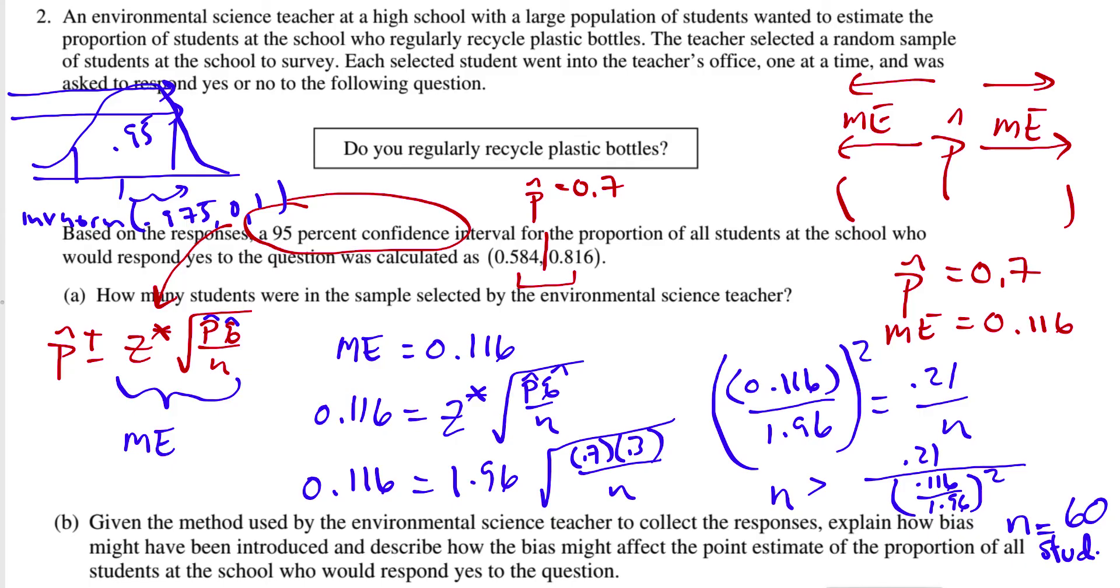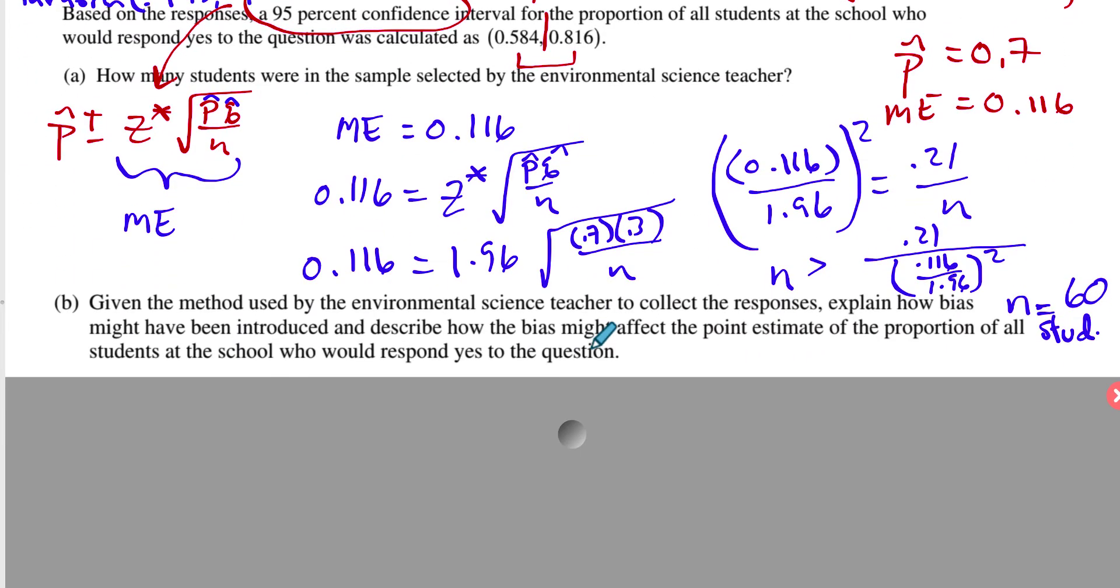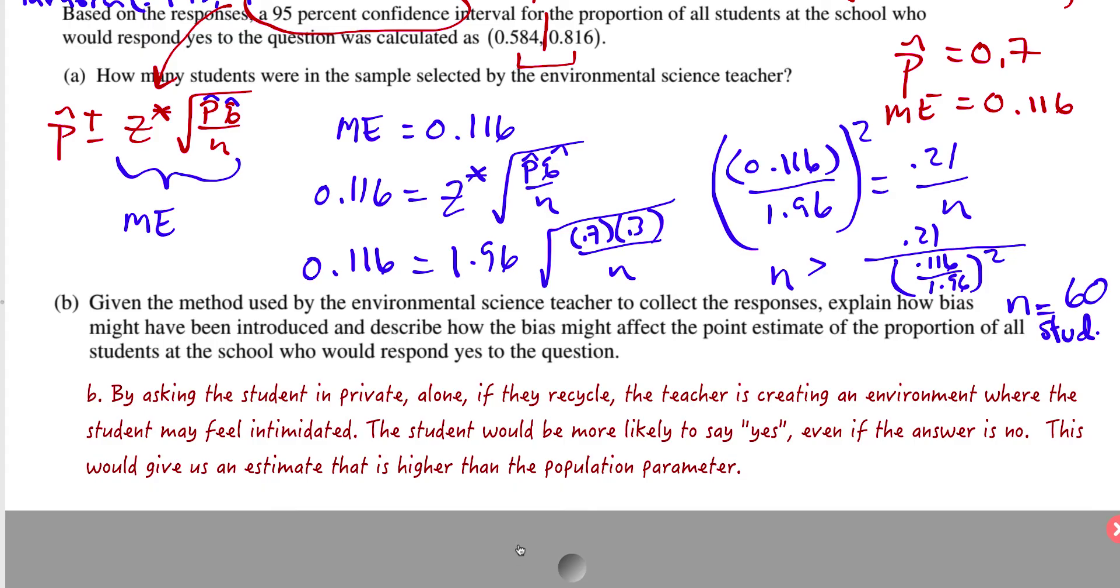Part B, given that the method used was that she hauled them in the office, basically, and you know, kind of asked them right on the spot. And so how would that introduce some bias? And I would argue that if you're put in front of a teacher, and they ask you a question, you're going to want to say the right answer, regardless of what truth is, right? You're going to want to say, in this case, you'd want to say, yeah, I recycle. Obviously, who doesn't recycle? All right, so I would answer this by saying, by asking the student in private, alone, if they recycle, the teacher is creating an environment where the student may feel intimidated. The student would be more likely to say yes, even if the answer is no. This would give us an estimate that is higher than the population parameter. All right, so that answer is part B.